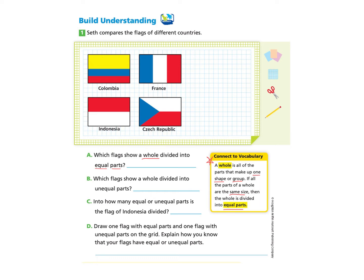Then we look at France, and we have the blue, white, and red. When I look at this flag, I feel that these are all equal. I can check by looking at the squares below each color — each stripe is three squares wide and they are all the same length. So France would be a whole divided into equal parts. Now let's take a look at Indonesia.